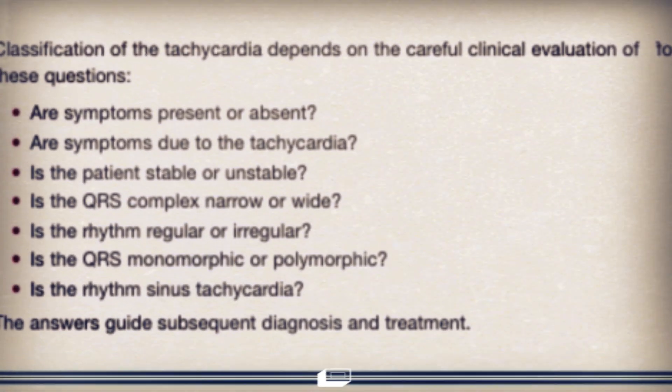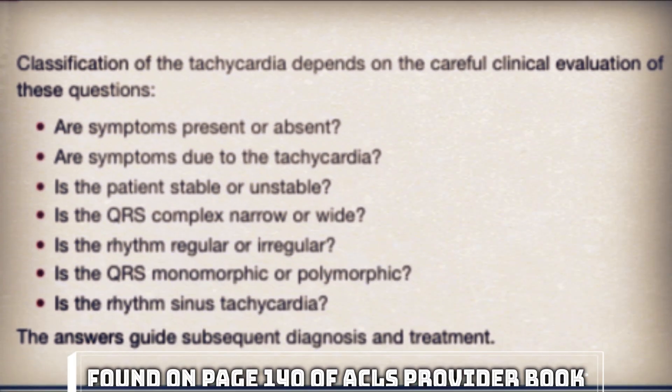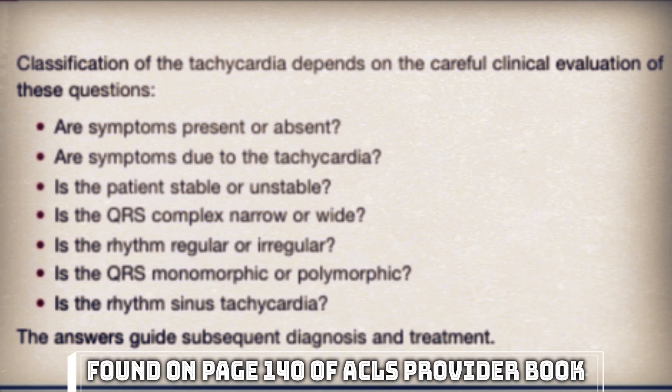Let's slow down and look at the ACLS algorithm. This info can be found on page 140 of the American Heart Association's ACLS provider book. The AHA describes how to classify types of tachycardias. In order to diagnose and treat, we will need to answer these questions before we proceed: are symptoms present or absent?